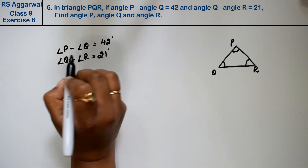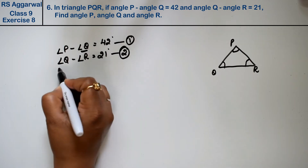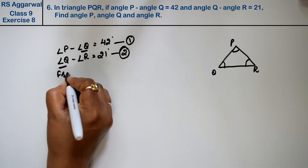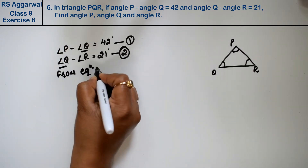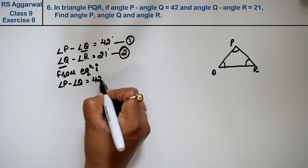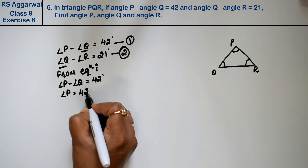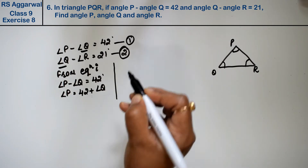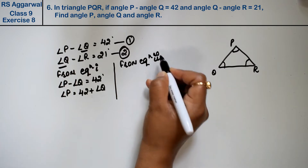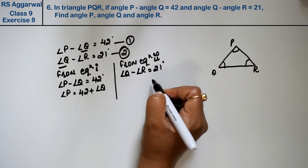Don't get confused by the minus signs. We have two equations. The common angle in both is angle Q, so we will find angle P and angle R in terms of angle Q. From equation 1: angle P minus angle Q equals 42 degrees, so angle P equals 42 plus angle Q. From equation 2: angle Q minus angle R equals 21 degrees, so angle R equals angle Q minus 21.